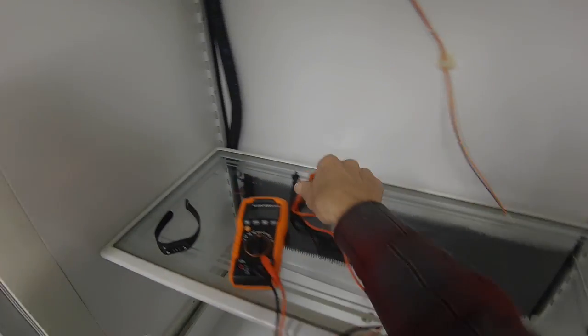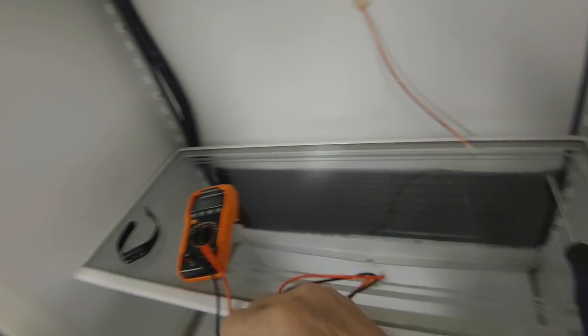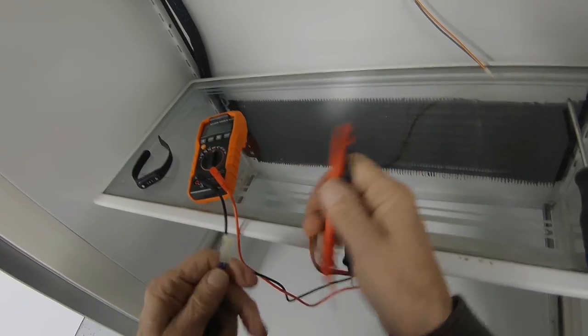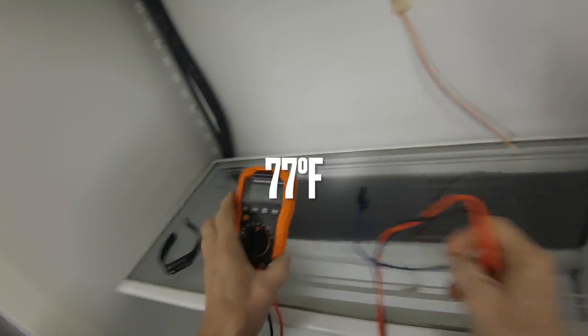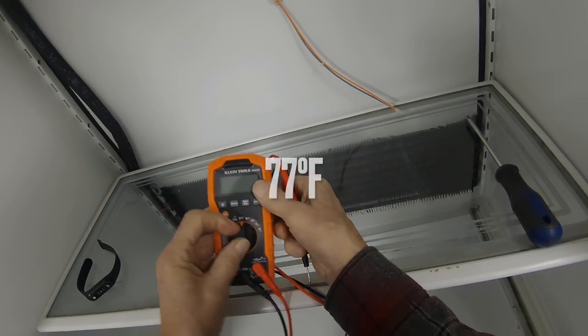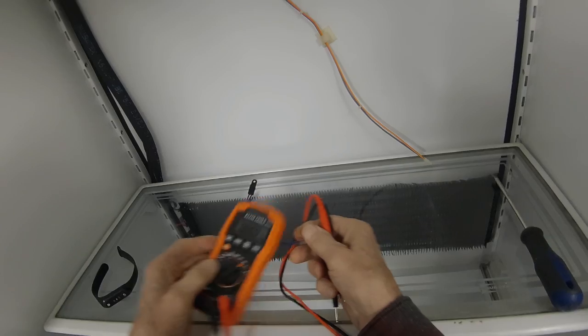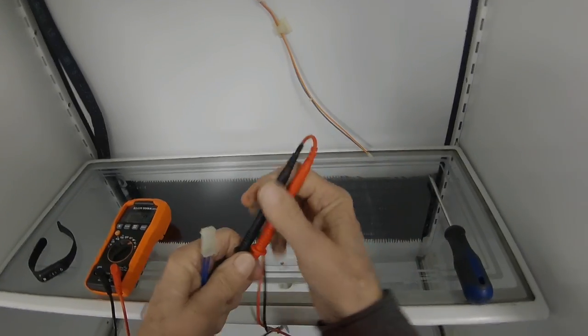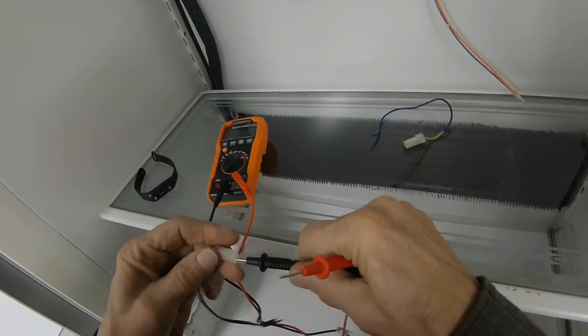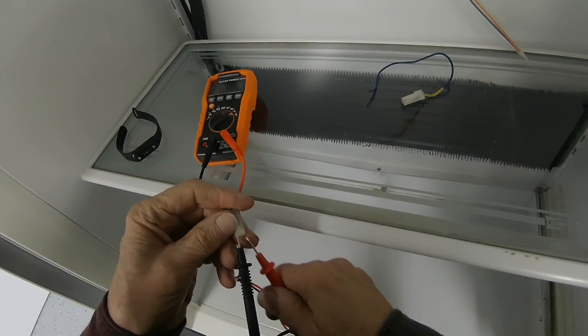Now you can check these thermistors at room temperature. They should be in the area of 8,000 to 20,000 ohms. So we're going to check the resistance at room temperature.